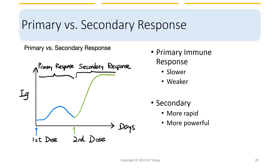Here is a graph illustrating primary versus secondary immune responses. The primary immune response is slow and weaker — for example, when you receive the first dose of a vaccine, the response is much weaker. However, if you receive a second dose of the same vaccine, these reactions will be much more rapid and powerful, as illustrated in this graph.